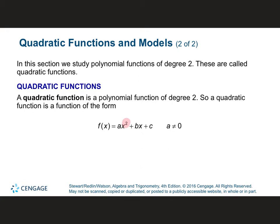You guys know how to find intercepts and zeros and all that stuff. The thing about quadratics is there are two kinds of forms we're going to talk about. The book calls it something a little different, but we're going to call it standard form — where the number in front of x squared is your a, the number in front of x is your b, and the number by itself is the constant, that's our c. And we're going to talk about something called vertex form.